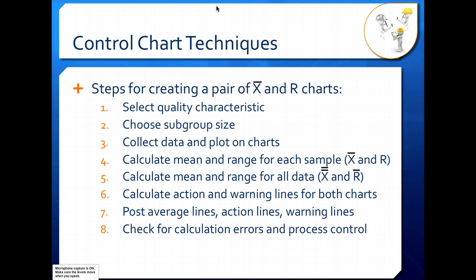The first step in creating a pair of these charts is to select our quality characteristic, and this comes from knowing about the process problem. The quality characteristic is the variable that you're monitoring. So do you want to measure temperature, pressure, flow, mixing speed? What is the quality that you're trying to monitor, and what do you need to take a look at to make sure you're within your desired control?